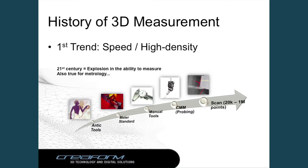Let's start by talking about the history of 3D measurement. Going back 100 years ago, we had antique tools. After that, it became a necessity to increase the speed and density of measurement. So obviously we have the basic standard, then manual tools, then the CMM — probing with CMM — which is a really accurate device, but there was a need for more speed and higher density measurement.